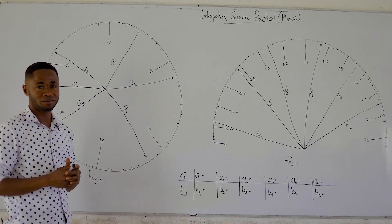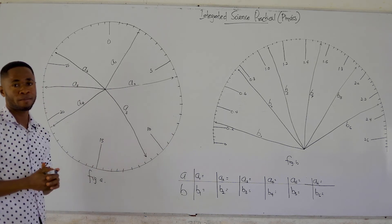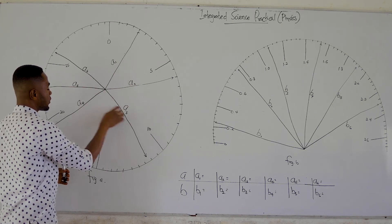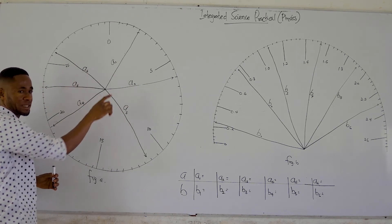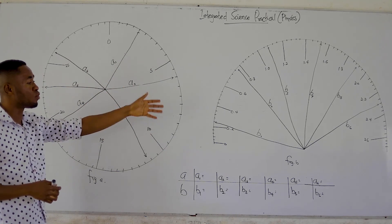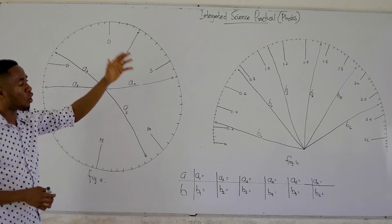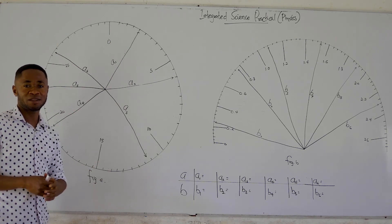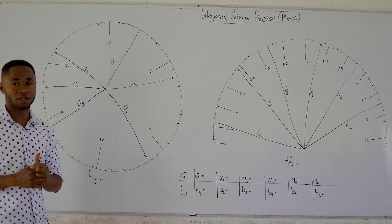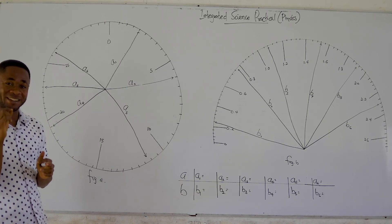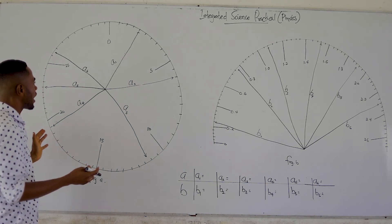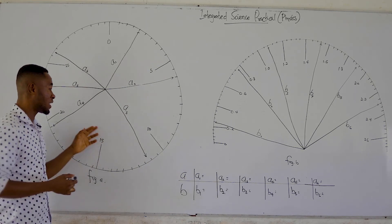So I decided I would prepare a video on how to do that with ease. We have two figures on the board. In figure A we've been asked to measure the values of a1, a2, a3, a4, a5, and a6. In figure B we've been asked to read and record the values of b1, b2, b3, b4, b5, and b6. We are going to use these two diagrams to learn a trick. Remember, for every trick there is a little work that has to be done.